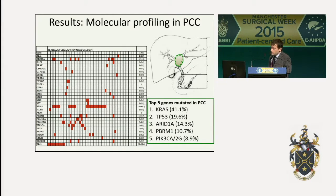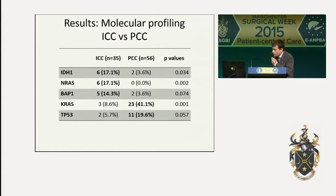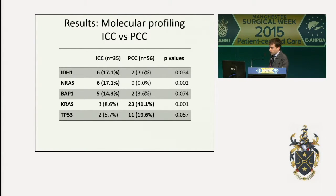This is the detailed description of perihilar cholangiocarcinoma, and you can see in the square the five genes most mutated in this type of tumor. A higher frequency of mutation was identified in intrahepatic versus perihilar in IDH1 (17% versus 4%), RAS (17% versus 0%), BAP1 (14% versus 4%), and KRAS (40% versus 9%). TP53 (20% versus 6%) was more frequently mutated in perihilar cholangiocarcinoma.